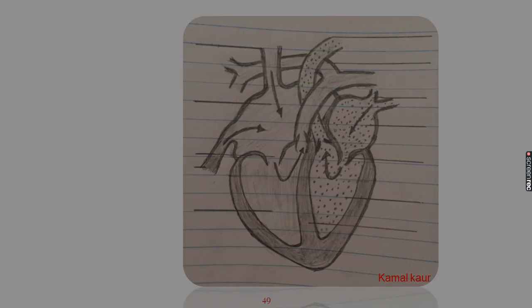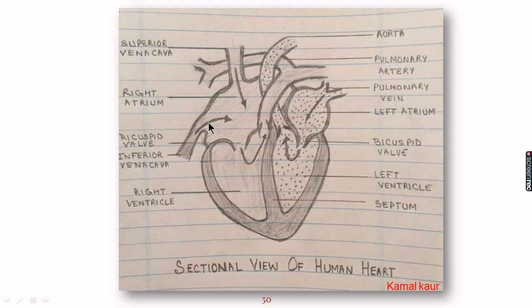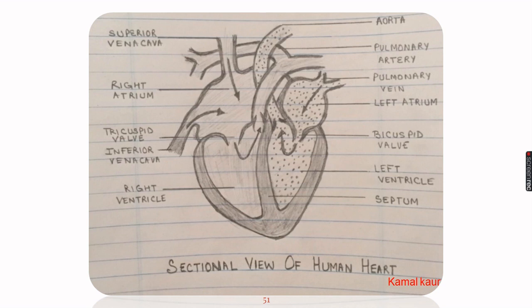Now comes the labeling part. For labeling, we will draw horizontal lines for all the parts that need to be labeled. Preferably, labeling should be done on the right-hand side, and only if necessary on the left side. Labeling should be done in capital letters. You can check all the parts carefully and label your diagram. We have now completed the diagram of the sectional view of the human heart.